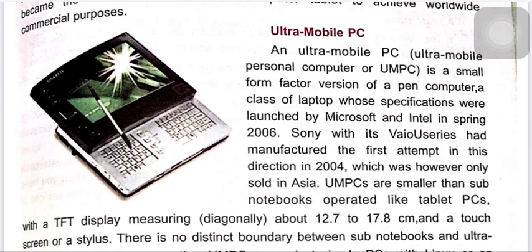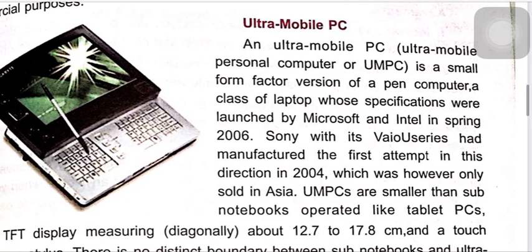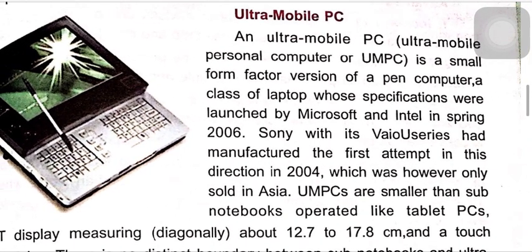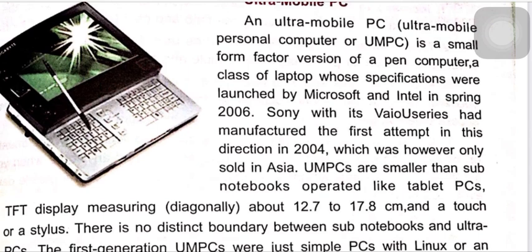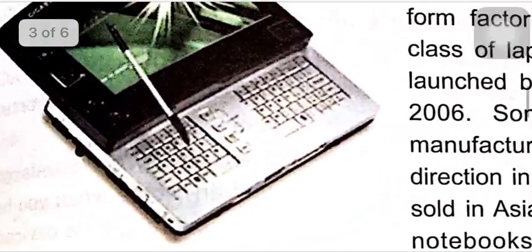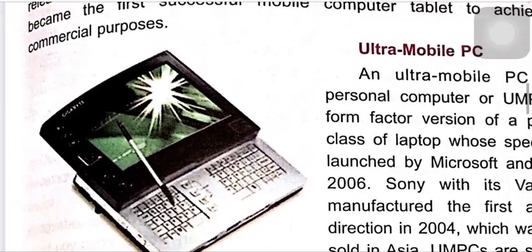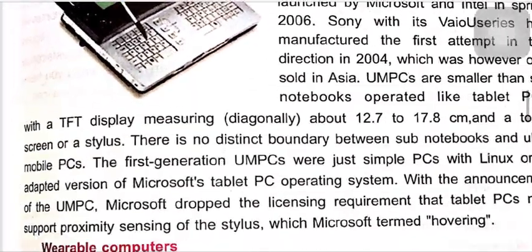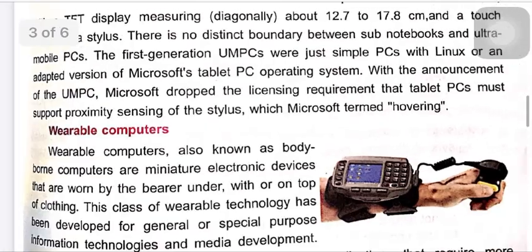Next is the Ultra Mobile PC. An Ultra Mobile Personal Computer, or UMPC, is a small form factor version of a tablet computer or class of laptop whose specifications were launched by Microsoft and Intel in spring 2006. This type of device has a keyboard, and also a light pen which can be used as a touchscreen to perform functions.